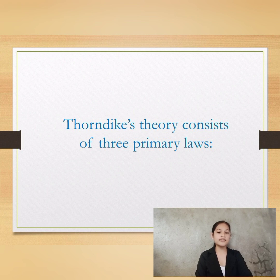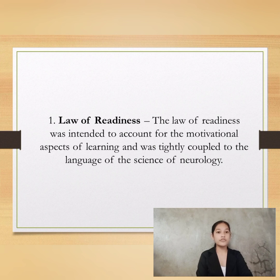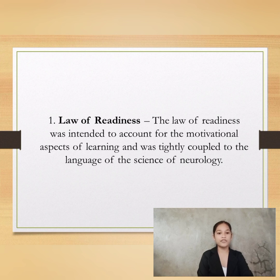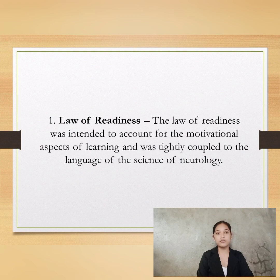Thorndike's theory consists of three primary laws. The first law is the law of readiness. The law of readiness was intended to account for the motivational aspects of learning and was tightly coupled to the language of the science of neurology. This law states that learning can only take place when a student is ready to learn. When students feel ready, they learn more effectively and with greater satisfaction than when not ready.